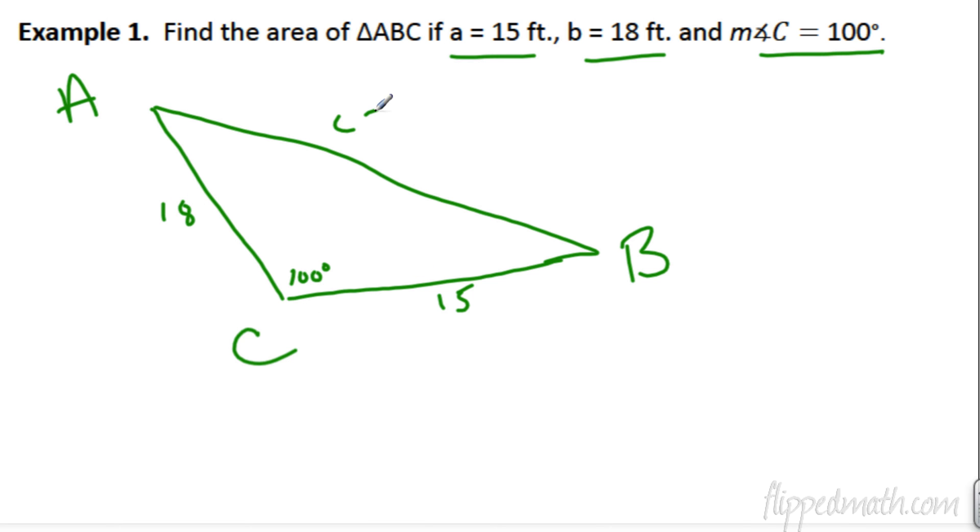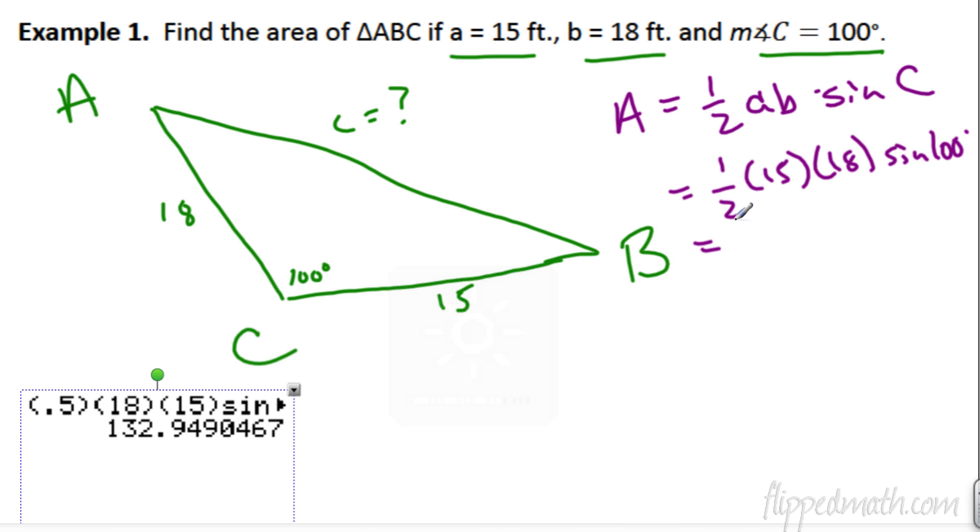Side length C is, we don't know, but we would have to use the law of cosines to figure that all out. But, we don't have to do that, because we know that the area of a triangle is equal to one half AB times the sine of C. Now, what I always do is I figure out what angle did they give us? They gave us C, so I need the other two legs here in front. So, one half A, we know A is 15. B, we know B is 18.